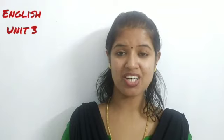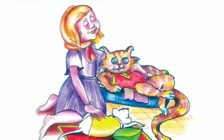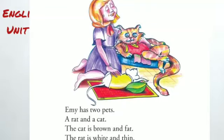Here goes the first picture. Can you see the picture, children? What can you see from the picture? You can see a girl, a cat, and a mouse. So let's see what it is. Immy has two pets. Immy is the name of that girl you can see in the picture. She has got two pets. Pets are the animals which we take care of at home.